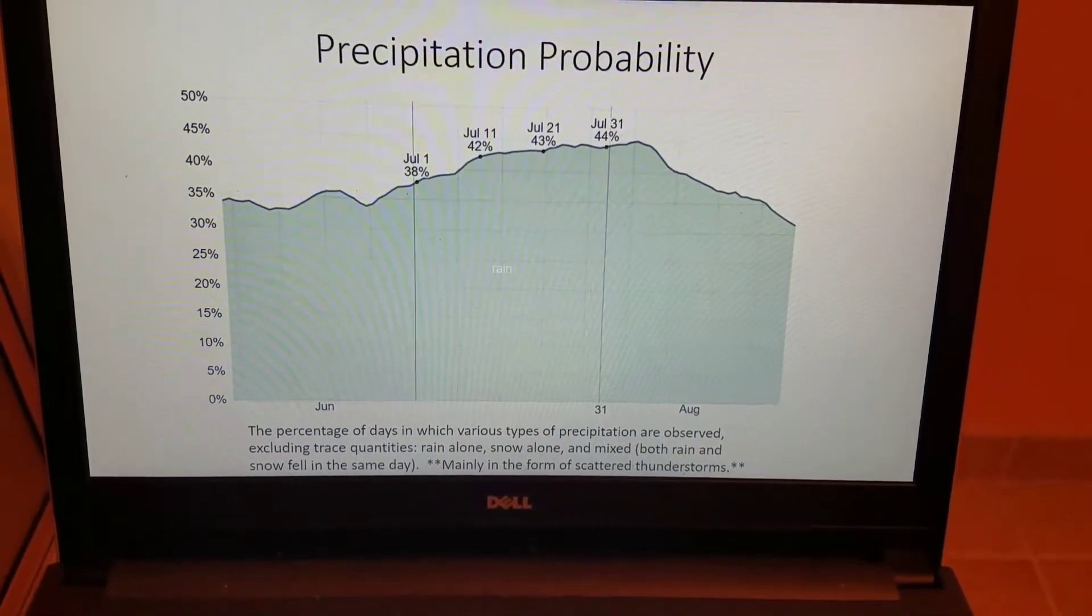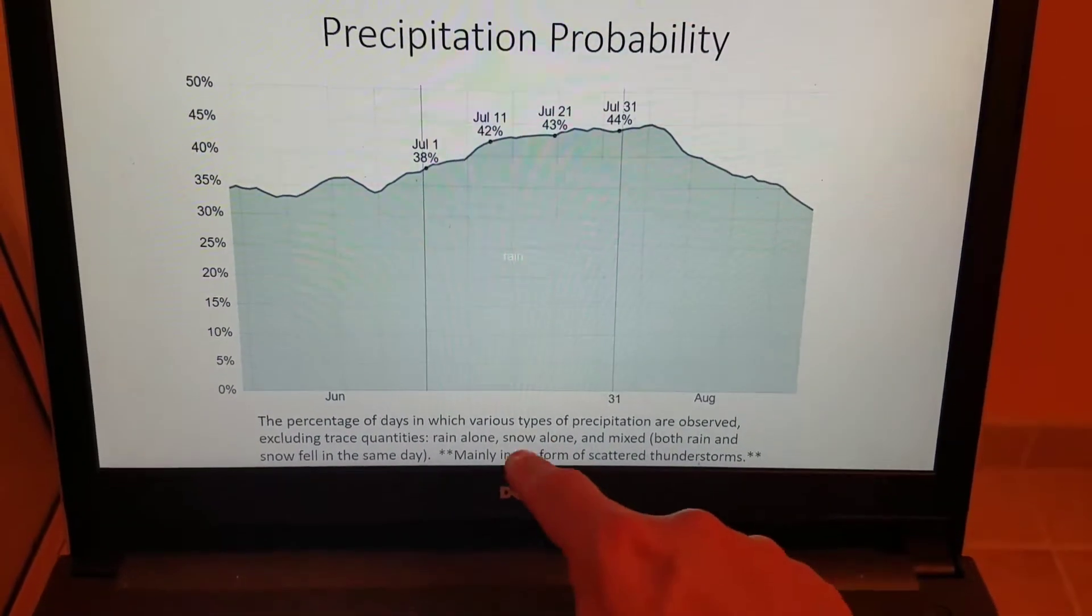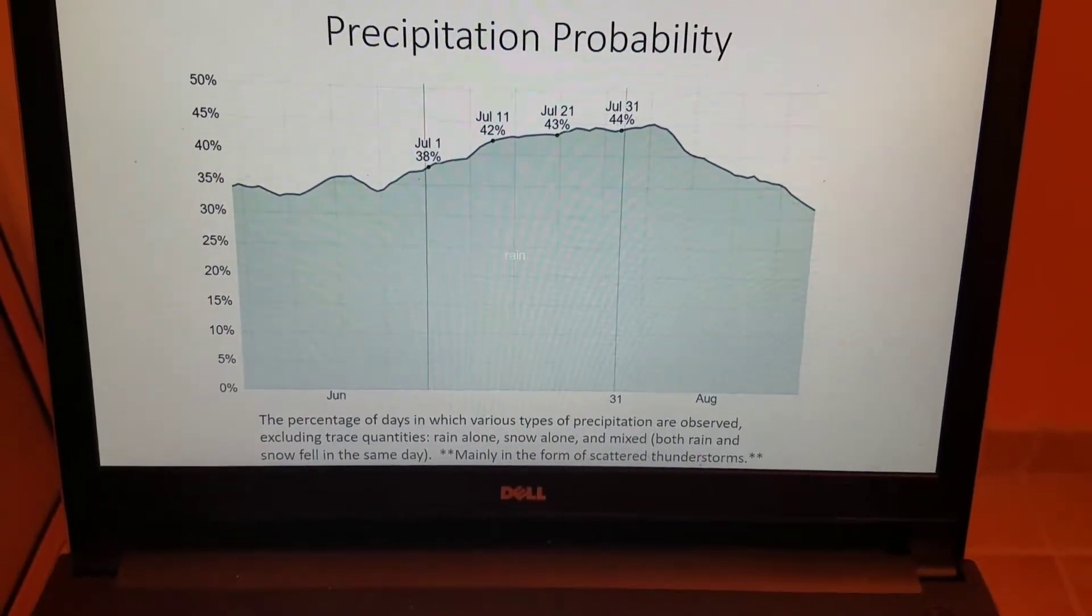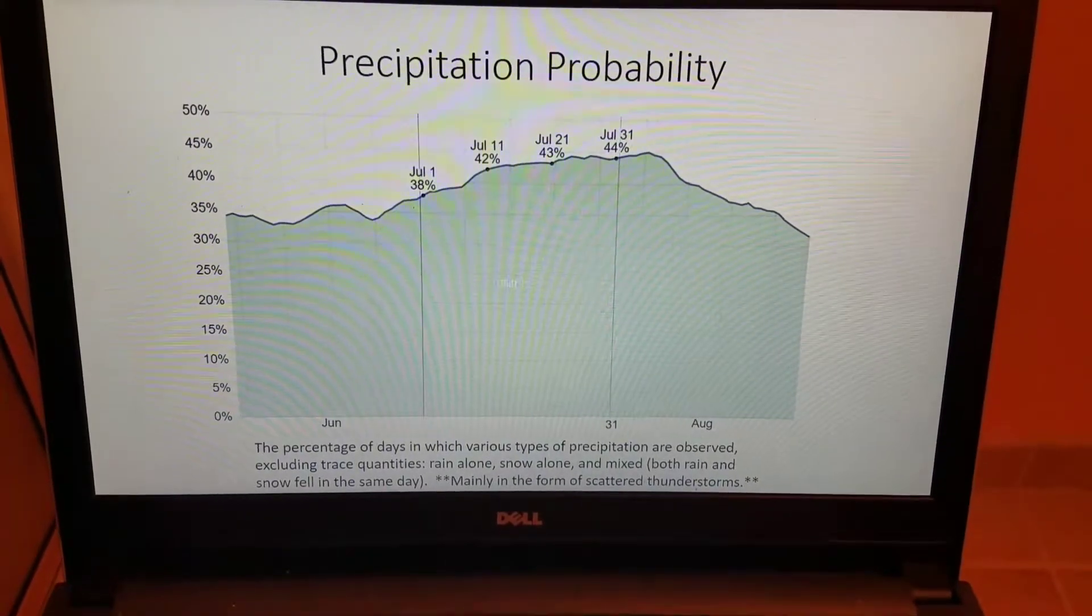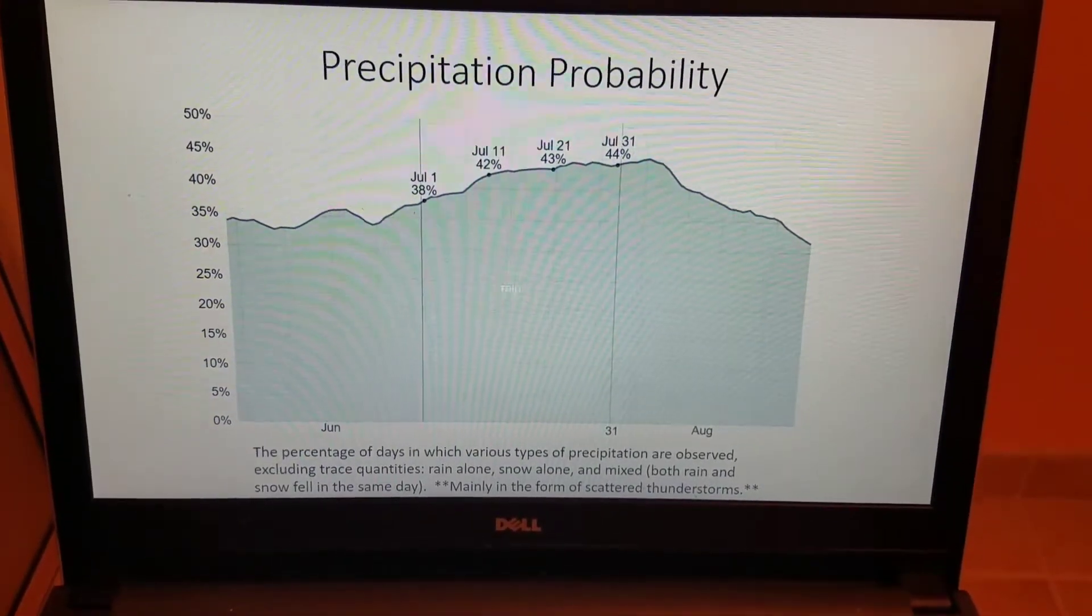And the range 38 to 44%, that takes place mainly in the form of scattered afternoon and early evening thunderstorms. The heating of the day in combination with warm, moist, and humid maritime tropical air mass.